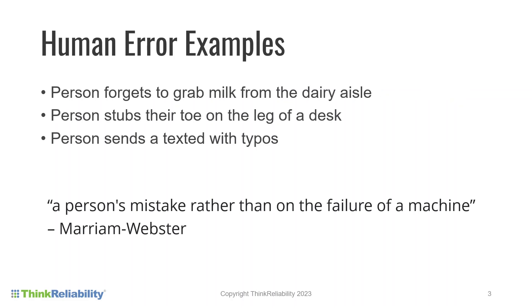One of the causes of each of these examples is the variation in human activity. People aren't robots programmed to act the exact same way every time they do something. People make mistakes, and that's to be expected.